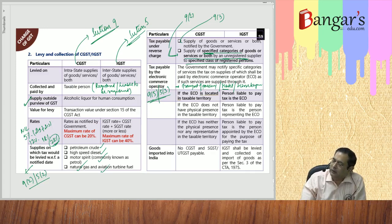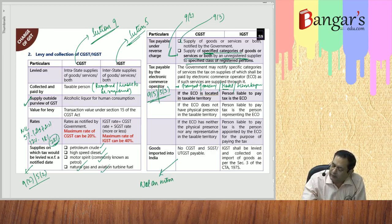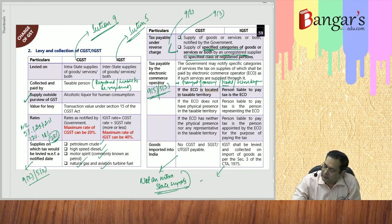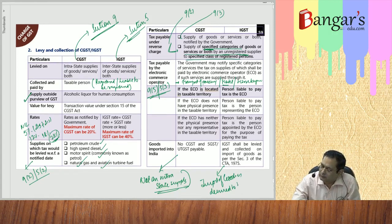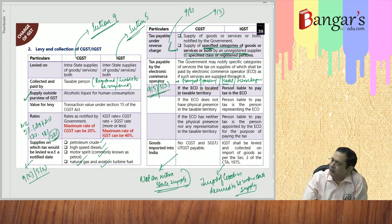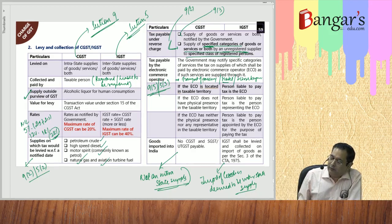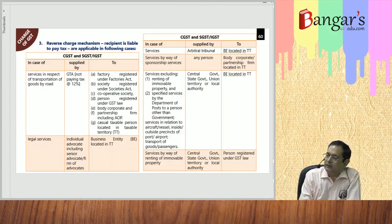In the case of goods imported into India, it is not an intrastate supply, so CGST and SGST cannot be levied. As per Section 7 of the IGST Act, import of goods is deemed to be interstate supply. Therefore, on import of goods, integrated tax shall be levied and collected as duties of customs. We have also discussed certain services notified under reverse charge mechanism.